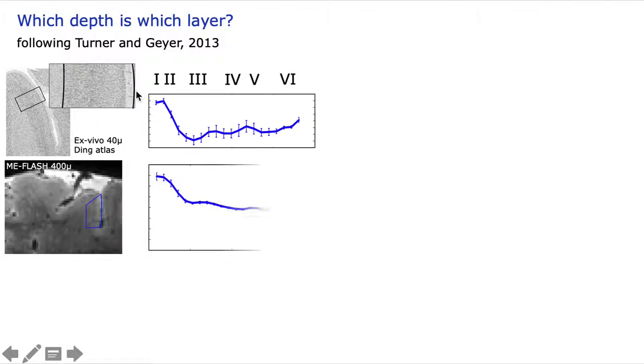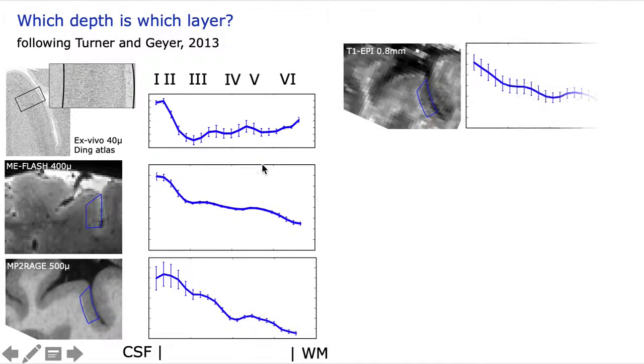We followed the post-mortem calibration approach outlined in the book from Bob Turner, where we use cadaver samples, for example from the big brain or elsewhere, and try to identify characteristic landmarks across layers and see if they're also visible in iron-weighted or myelin-weighted high-resolution anatomical data like 400 micrometer flash or 500 micrometer MP2 range and even 800 micrometer functional T1-weighted data.